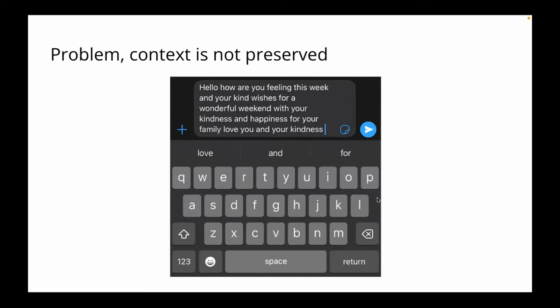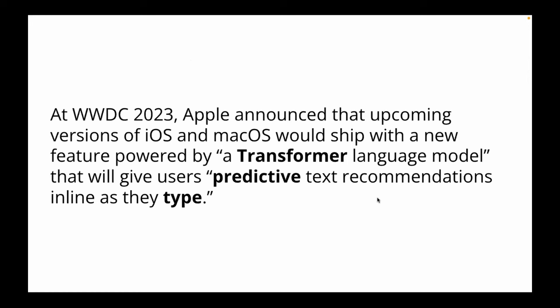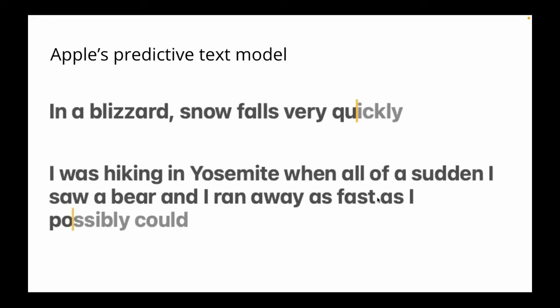The problem most of the time is that if you keep tapping the middle word — which in iOS refers to the highest probability of the next word — you will end up with a very garbled message which doesn't mean anything. Good news for iPhone users: Apple announced they will use a transformer language model to help you write better messages. If you've updated to iOS 17 or the latest macOS, you've seen it predict the next word very well, capturing the whole context of the conversation.